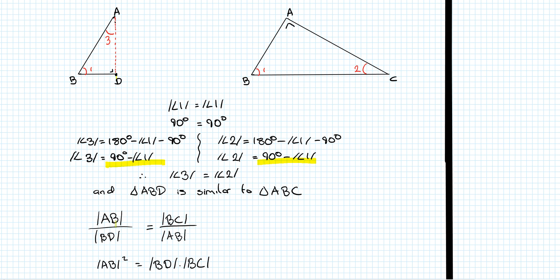Using the ratios, we're interested in AB because that's one of the lengths we're going to prove as part of the hypotenuse sum. Remember that AB is the hypotenuse of the small triangle, and later on we'll be looking at the hypotenuse of the medium triangle.